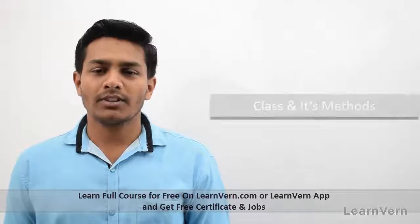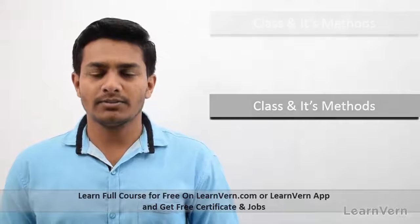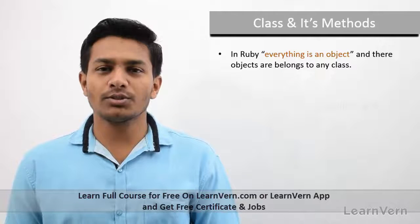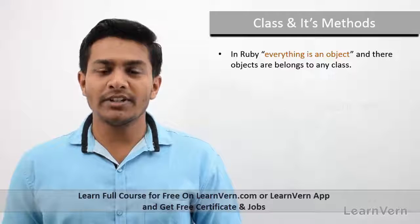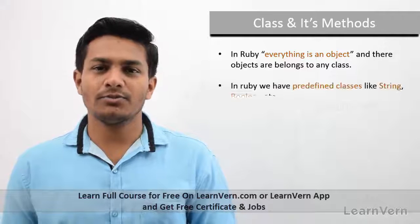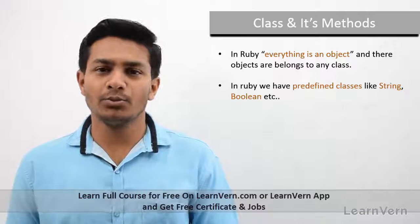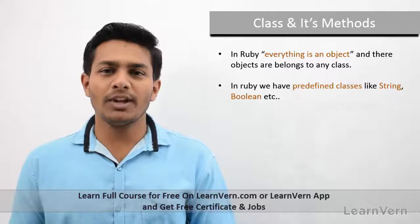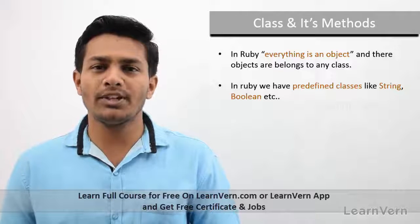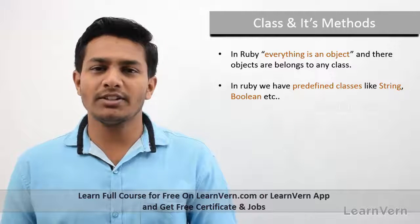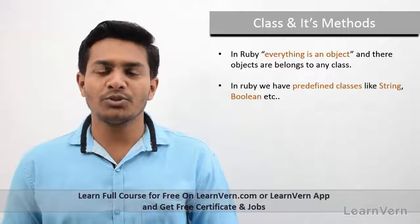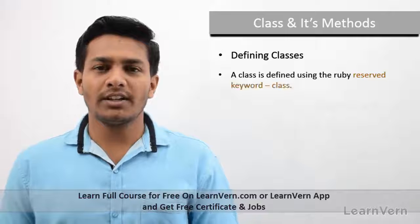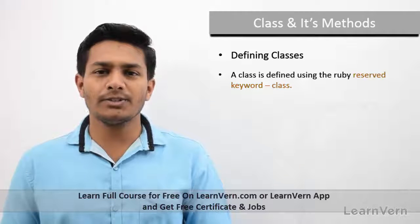Class and its methods in Ruby — everything is an object, so each and every object belongs to a class. For example, string, boolean, hash, etc. In Ruby we have rich sets of predefined built-in libraries and built-in classes that we can use to develop our code.